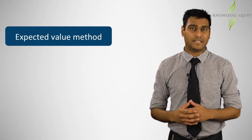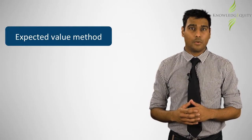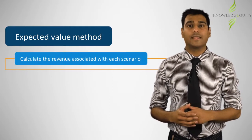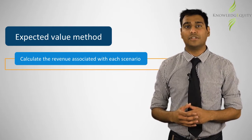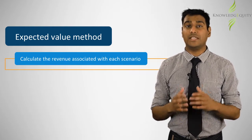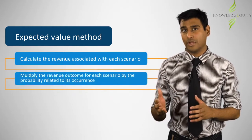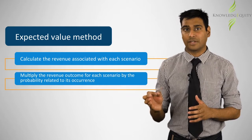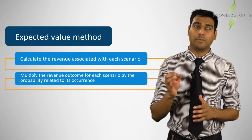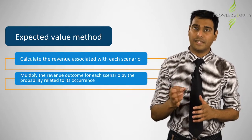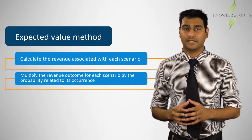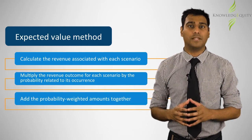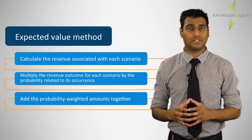Using the expected value method, we would apply the following steps. One: calculate the revenue associated with each scenario. Two: multiply the revenue outcome for each scenario by the probability related to its occurrence. And three: add the probability-weighted amounts together.